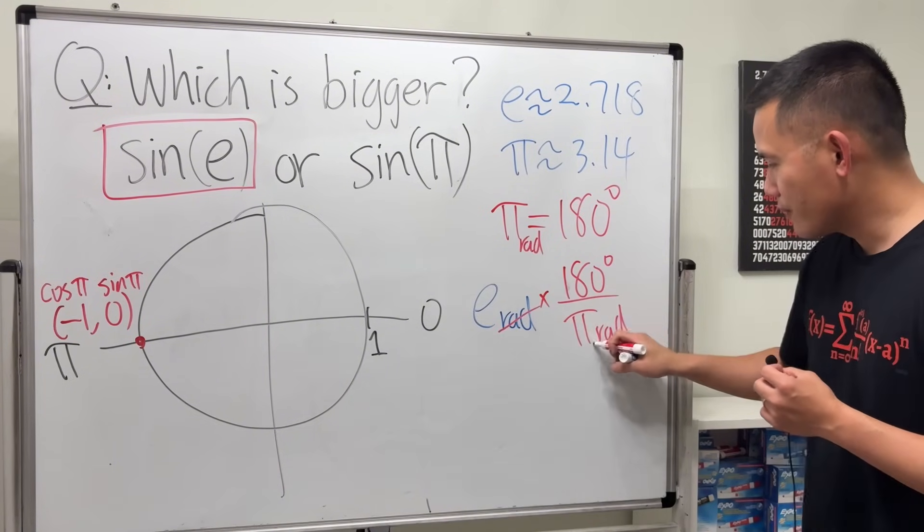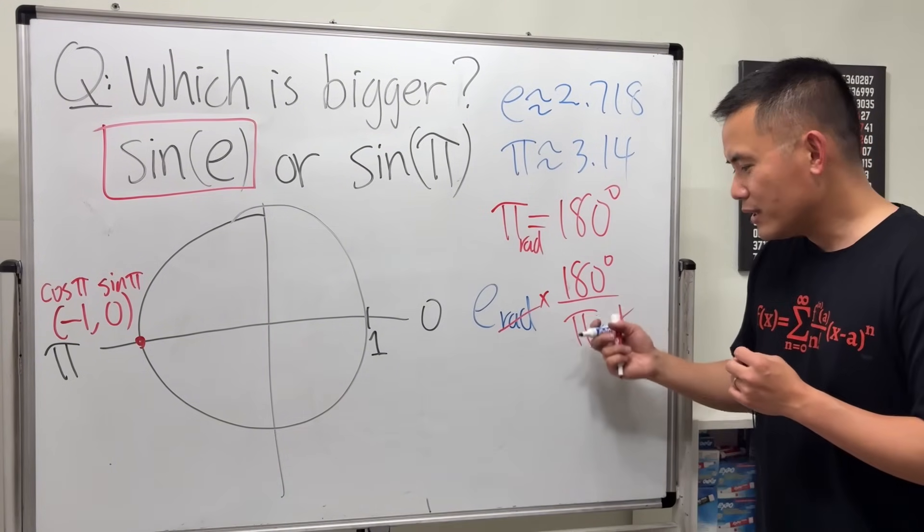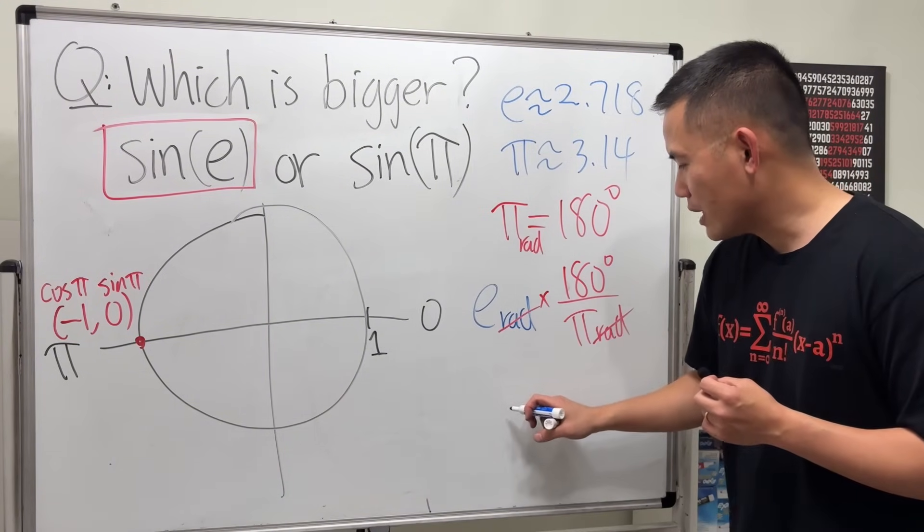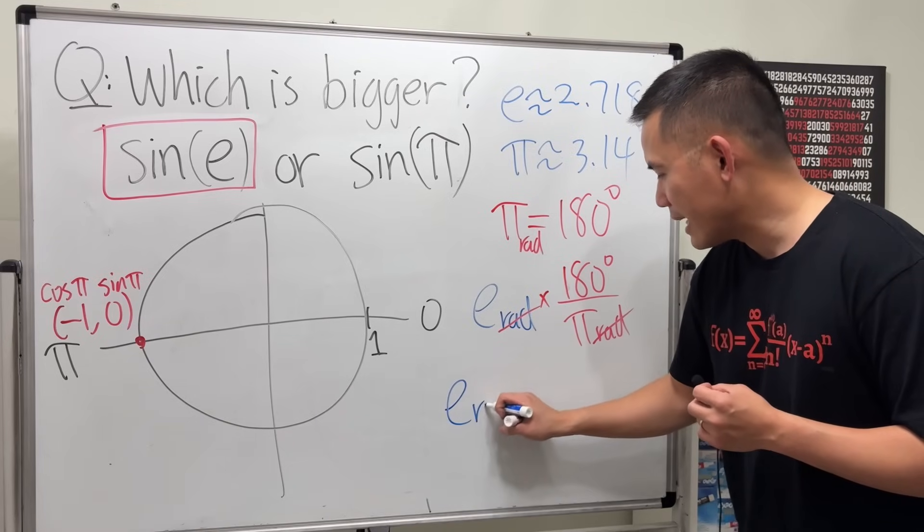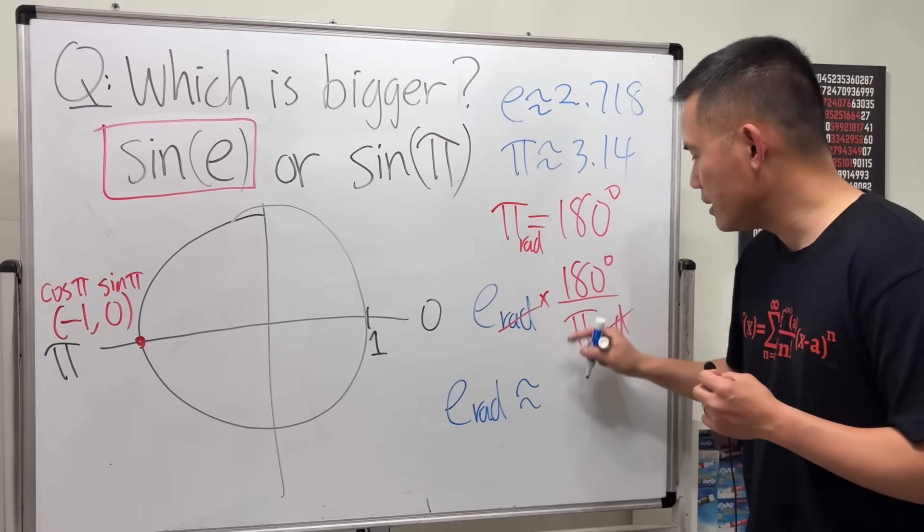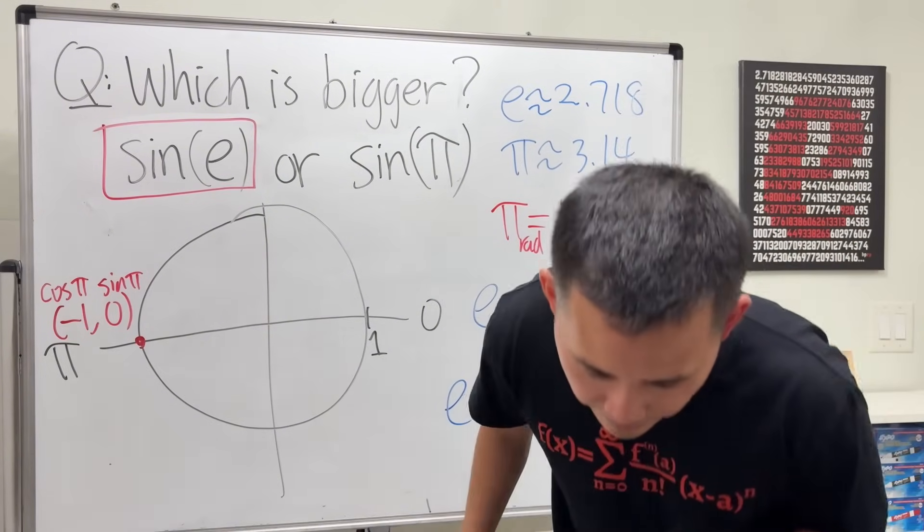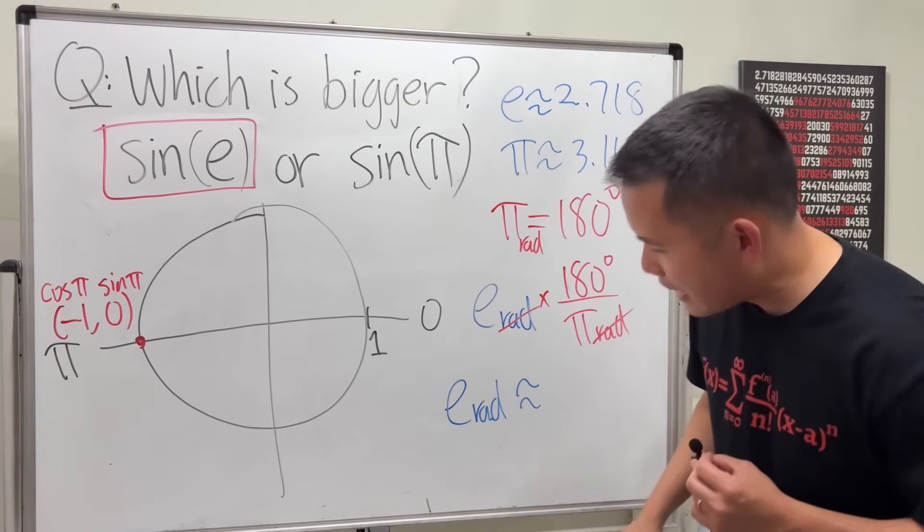And the rad cancel, and then just go ahead and use the calculator. And this right here will tell us e rad is approximately 155.75 degrees.